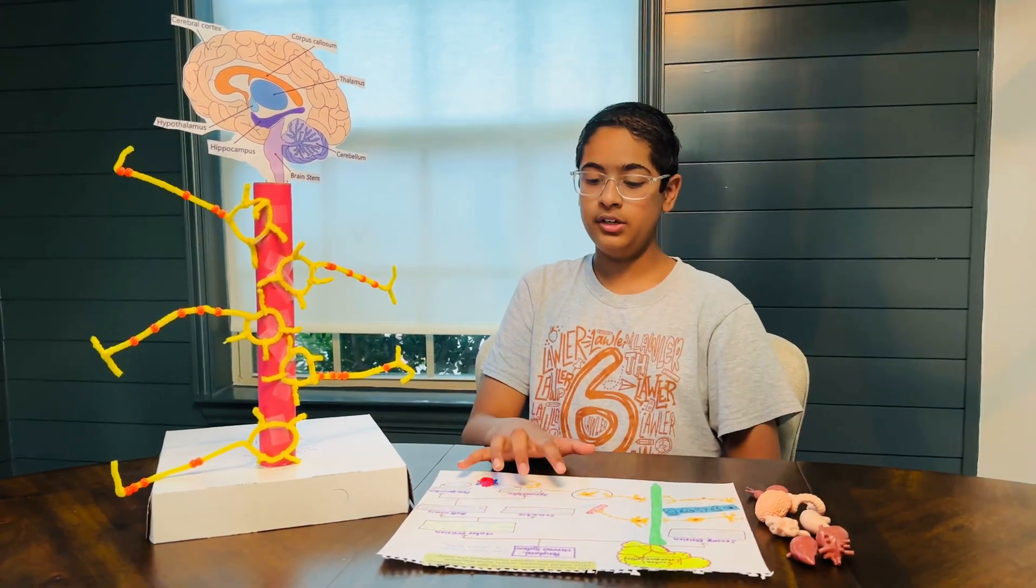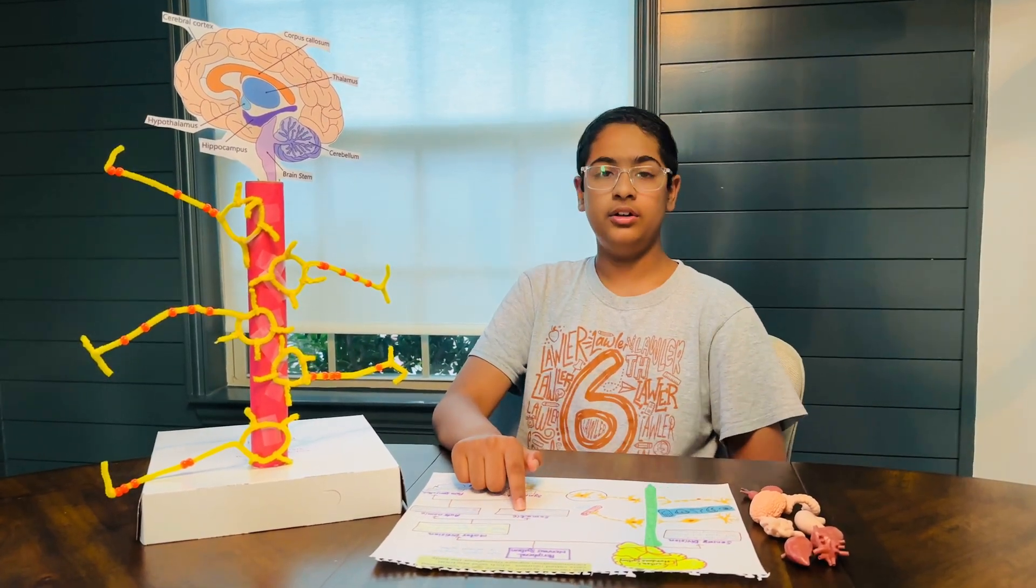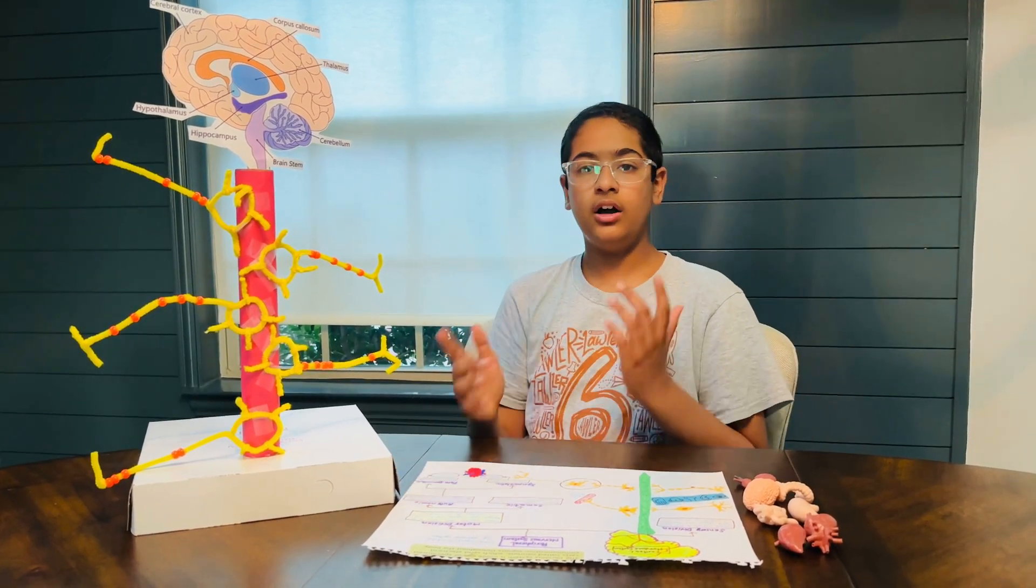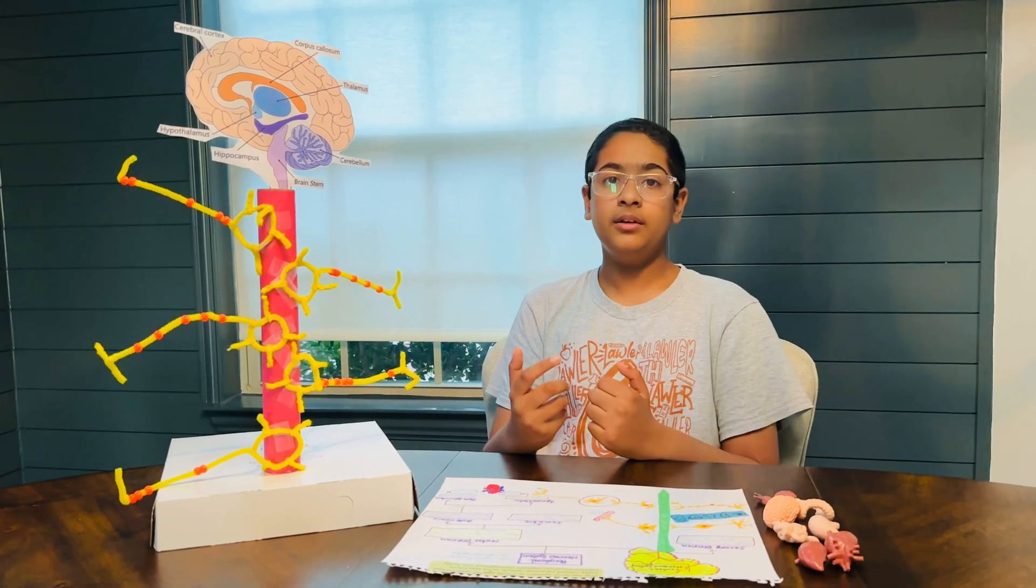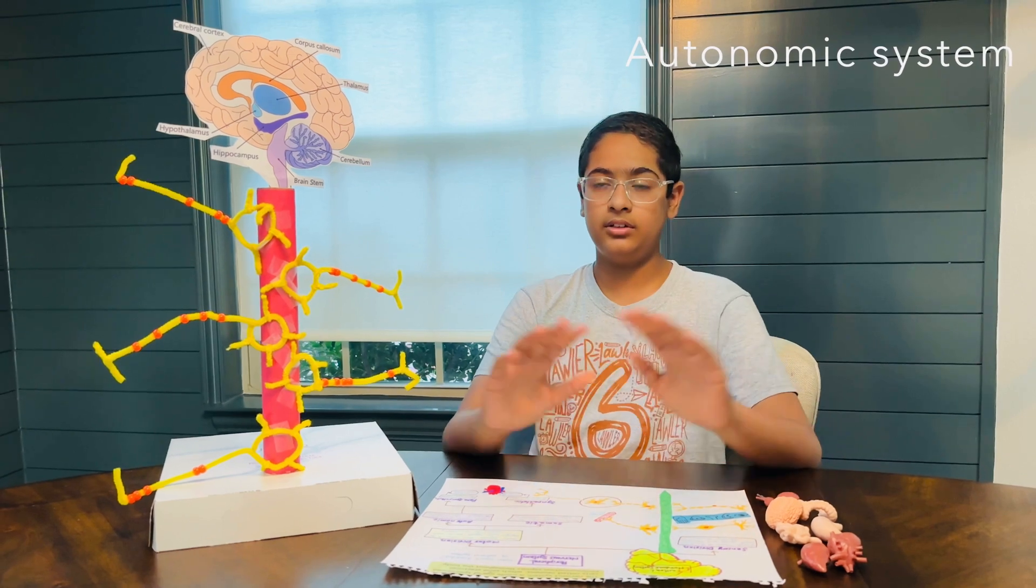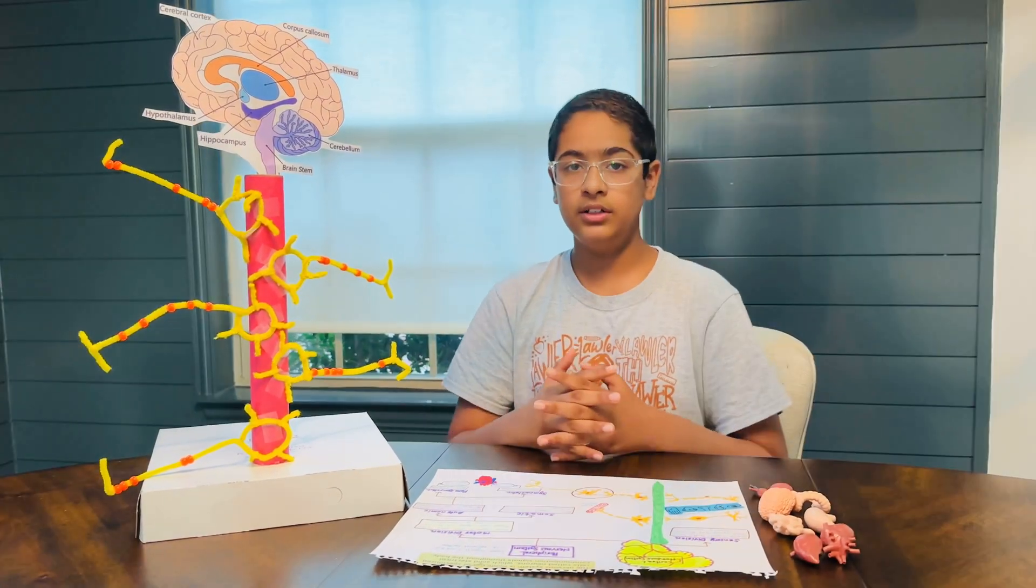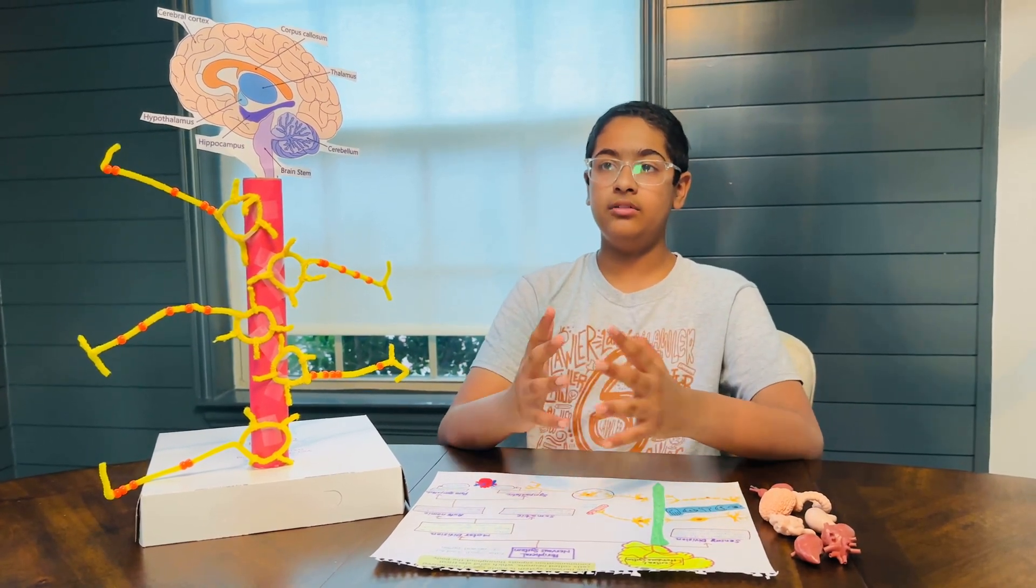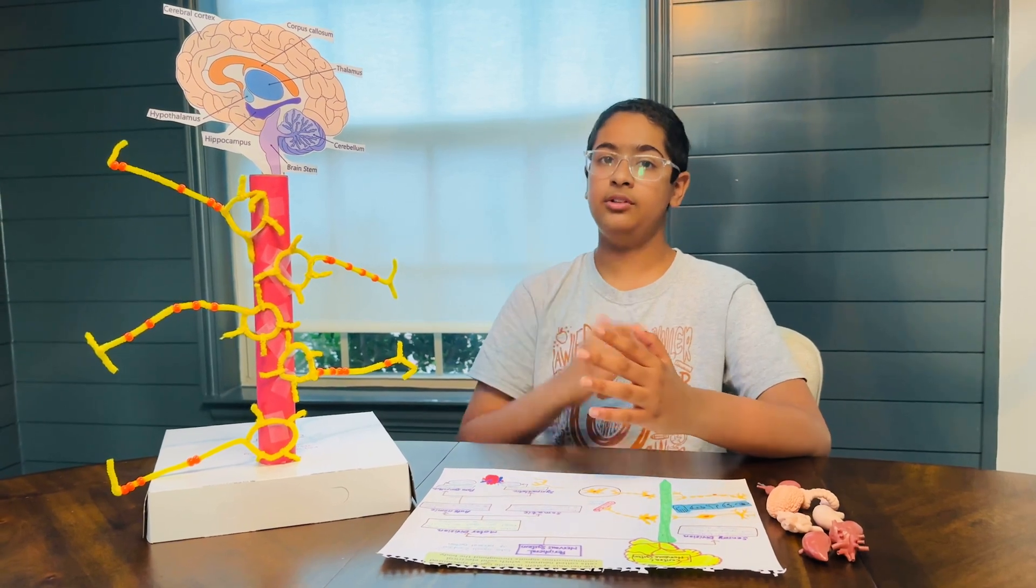In the motor division, it's split into two different parts, that being the somatic nervous system and the autonomic nervous system. So the autonomic, which sounds like automatic, it practically means that it's taking control over all of the involuntary muscles. Involuntary means that the brain is sending the signals to those parts without us knowing it.